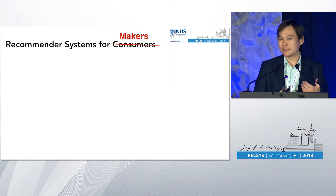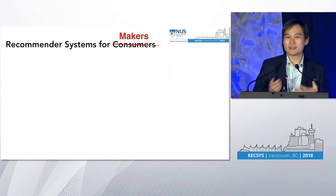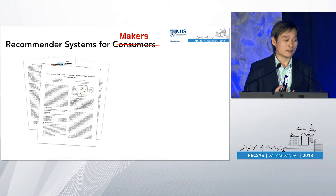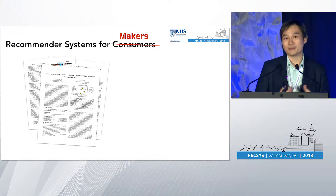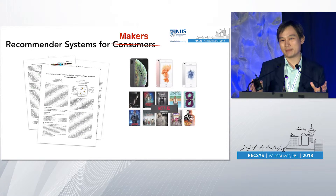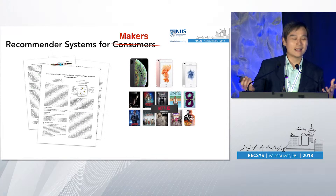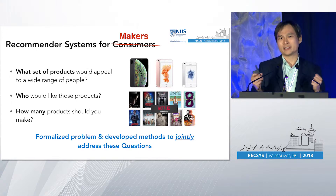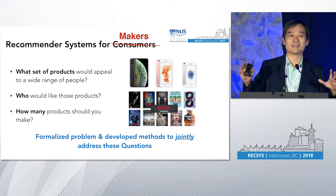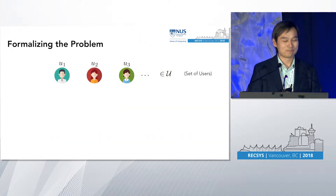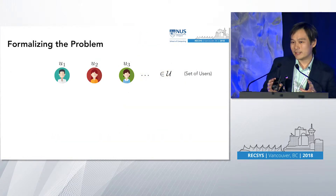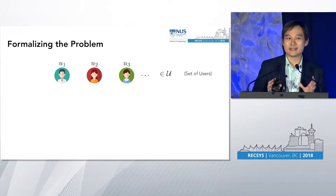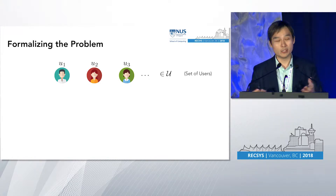If you're an item maker and not an item consumer, you have a different set of questions. What kind of product should you make in order to appeal to a wide range of people? What kind of papers would be interesting? Who would like those products? And if you're interested in market domination, how many products do you need to make to cover the largest segment of the market? These questions aren't really answered by any existing recommendation system for consumers. That's the problem we looked at.